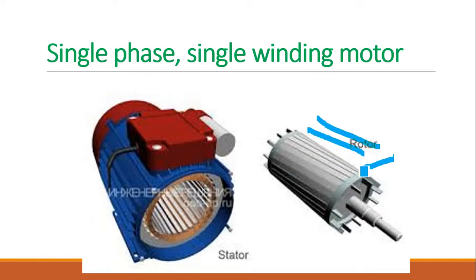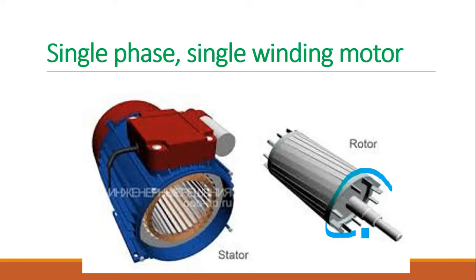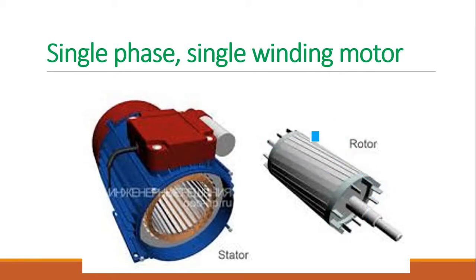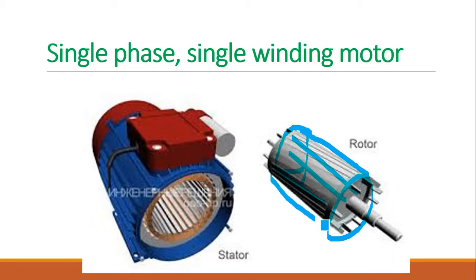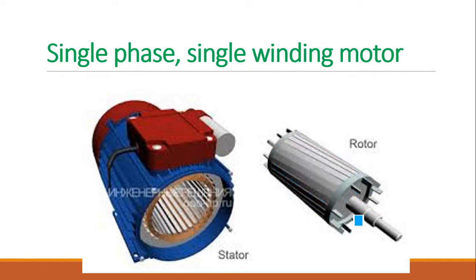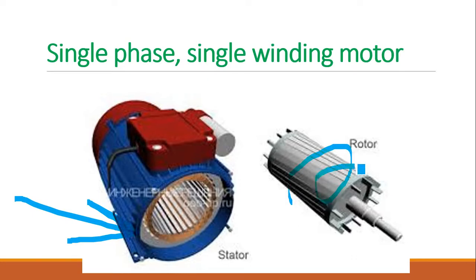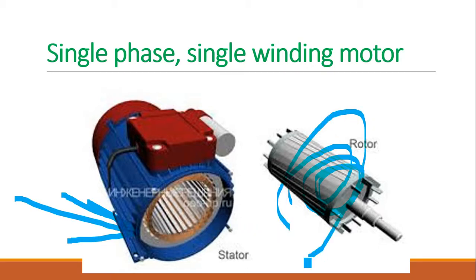The rotor has multiple rods — conductors — that are short-circuited at both ends by what is known as the end ring, or shorting ring. The conductors are seen in an inclined position, and the shorting circuits are at both ends. It looks like a cage from bottom to top, which is why it is called a squirrel cage rotor. When AC supply is given, flux is set up and an EMF is induced in these conductors due to the alternating flux.